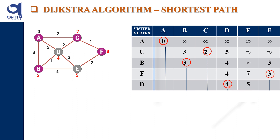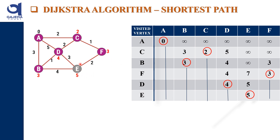Between D=4 and E=5, the minimum is D=4, so node D is selected. From D, the adjacent nodes A, B, and C are all already visited. The only unvisited node is E. Distance via D to E is 4 plus 3 = 7, which is greater than 5, so we keep E at 5. D is now visited. Finally, only E remains, so we select E as well. Since there are no unvisited vertices adjacent to E, the algorithm completes.